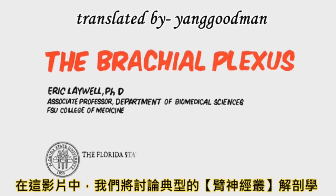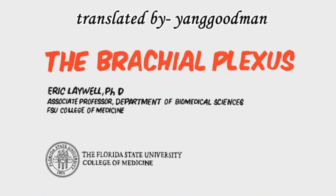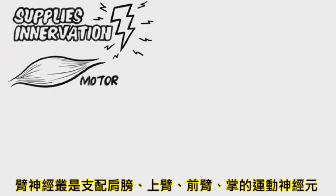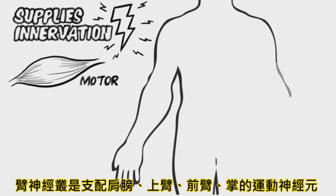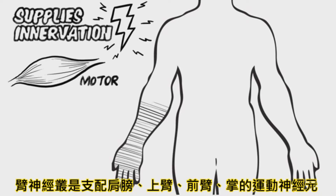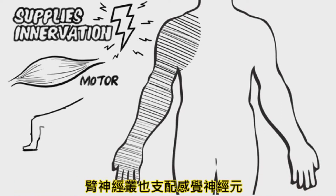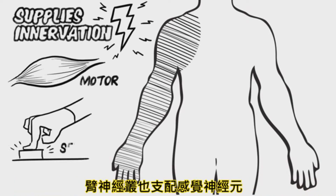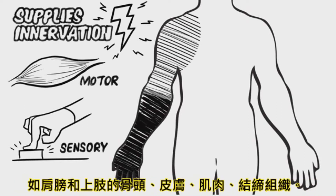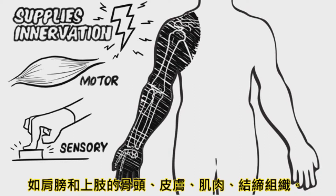In this video, we will discuss the typical anatomy of the brachial plexus. The brachial plexus supplies motor innervation to muscles of the shoulder, arm, forearm, and hand. The brachial plexus also provides sensory innervation to the bones, skin, muscles, and connective tissue of the shoulder and upper extremity.